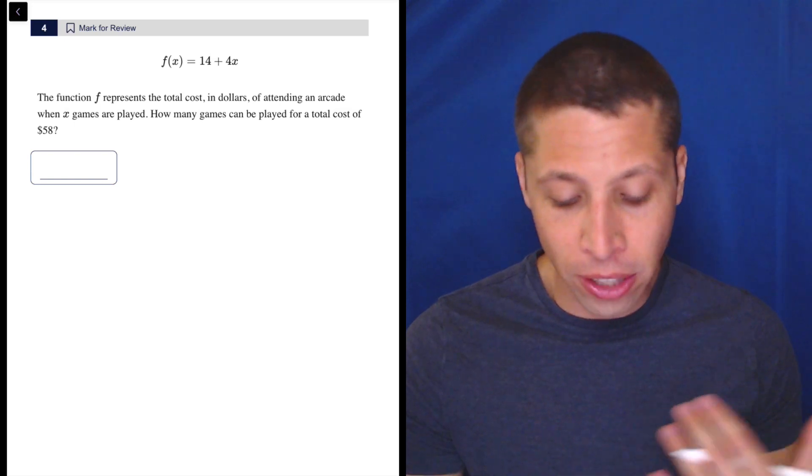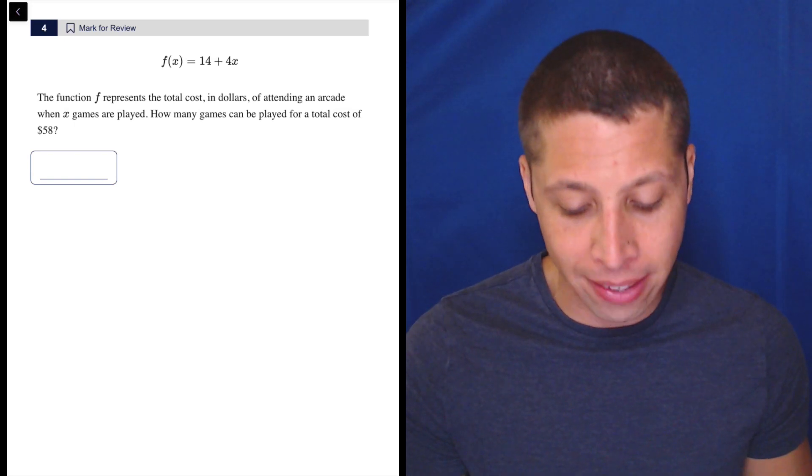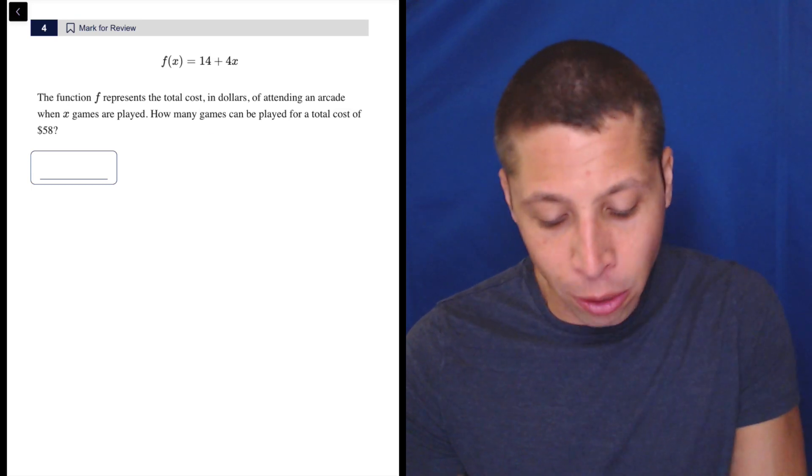So in this case, the function f represents the total cost in dollars of attending an arcade when x games are played. They're telling you what all the letters mean. How many games can be played? So games are x, remember that.